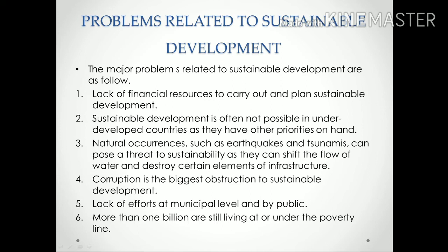Fourth, lack of efforts at the municipal level and by the people — both municipal-level government and public support are required to achieve sustainable development. Fifth, more than one billion people are still living at or under the poverty line, which is a very big problem for sustainable development.